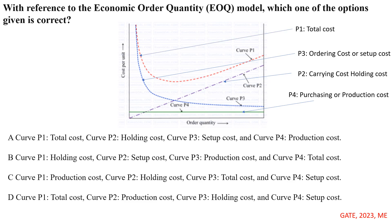We know that the total cost is the summation of purchasing cost, ordering cost, and carrying cost. It initially decreases with respect to order quantity and later increases. So curve P1 is the total cost.